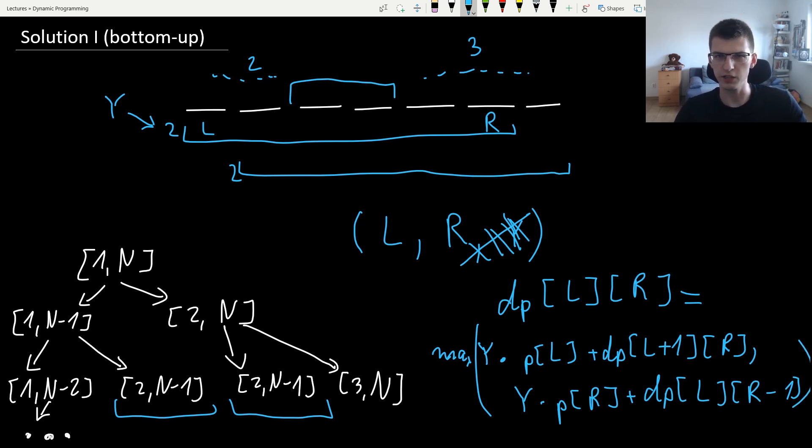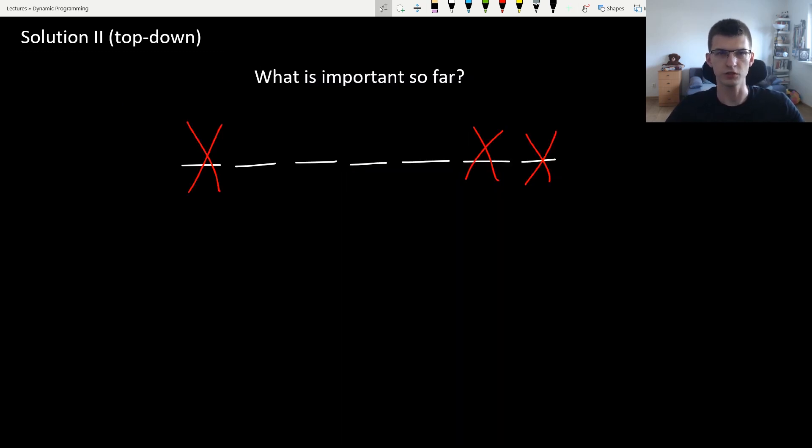One quite tricky thing here is to figure out in what order we should go through the states and that's something we'll talk about at the end of this lecture. Now we can just go to a different solution. This one was bottom-up but the name isn't very important. You should just understand how to come up with a solution, not really how to name it. Just get some working solution.